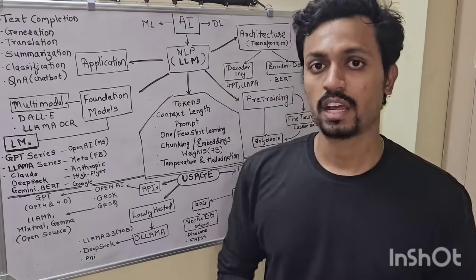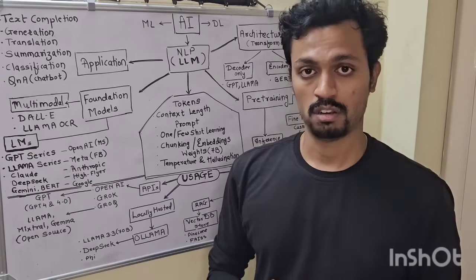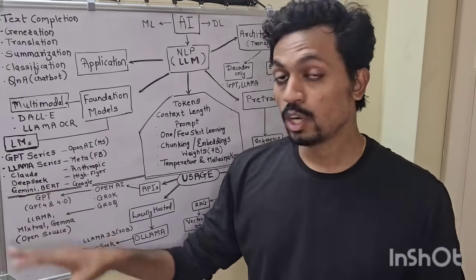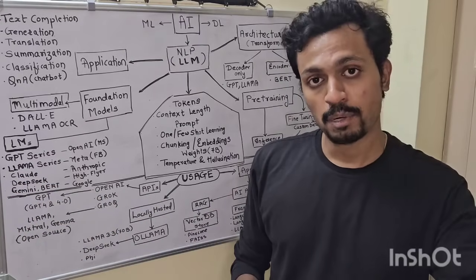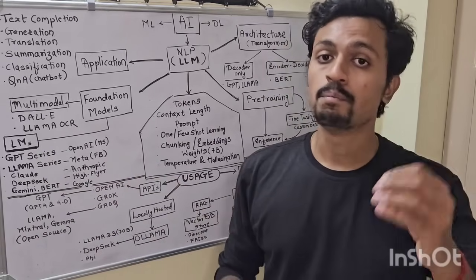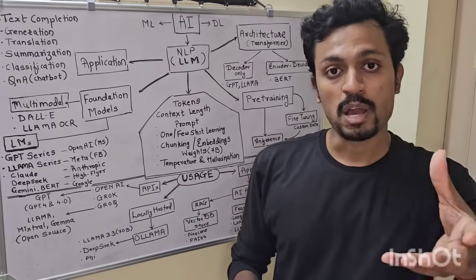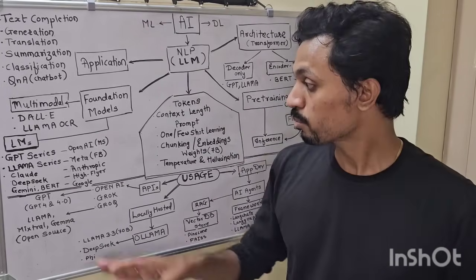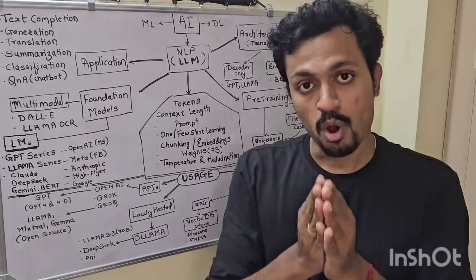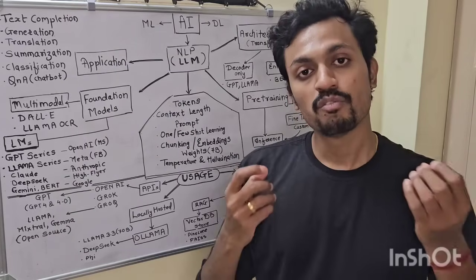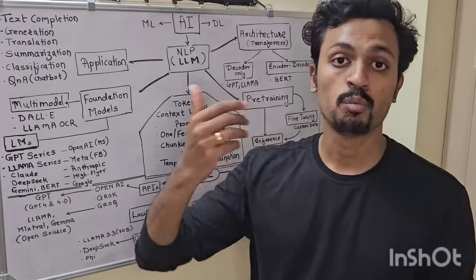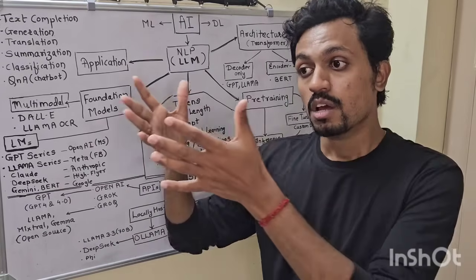In Foundation Models there are many varieties. One type is Language Models; another is Multimodal Models. ChatGPT is one language model. There are many varieties: the GPT series — GPT-3, GPT-4 — all OpenAI models, with Microsoft as a supporter. Then comes the Llama series — a Language Model built by Facebook. There are many versions: Llama 2.0, Llama 3.0.